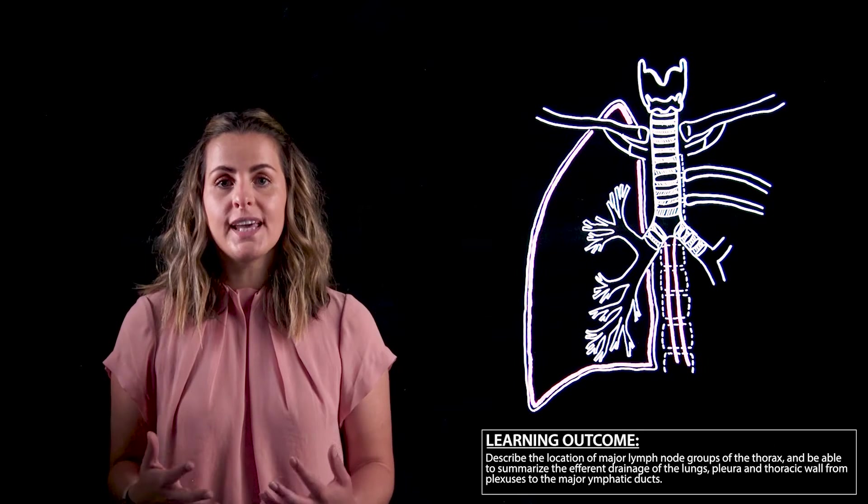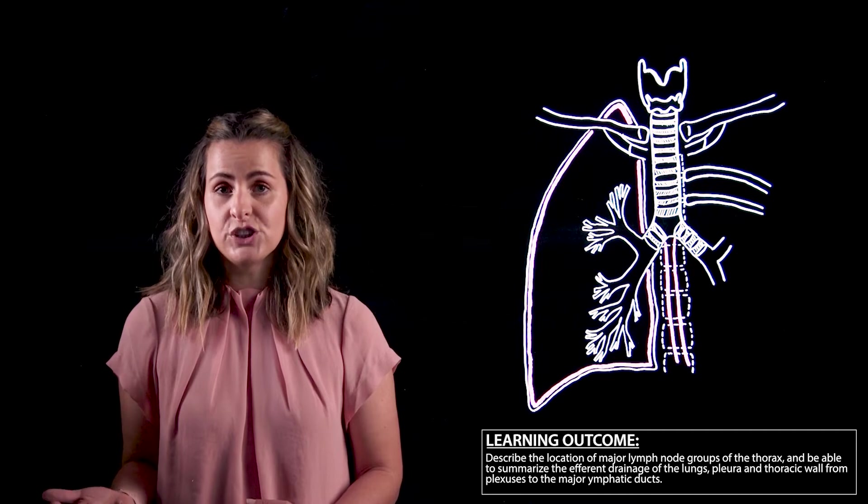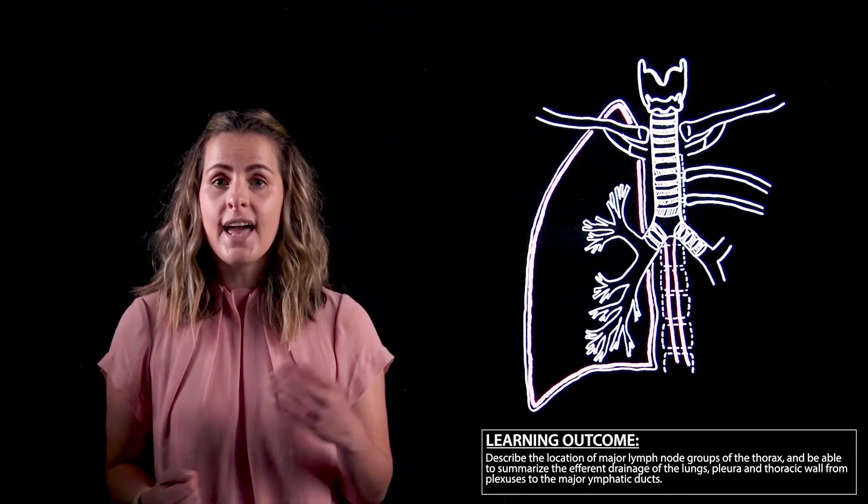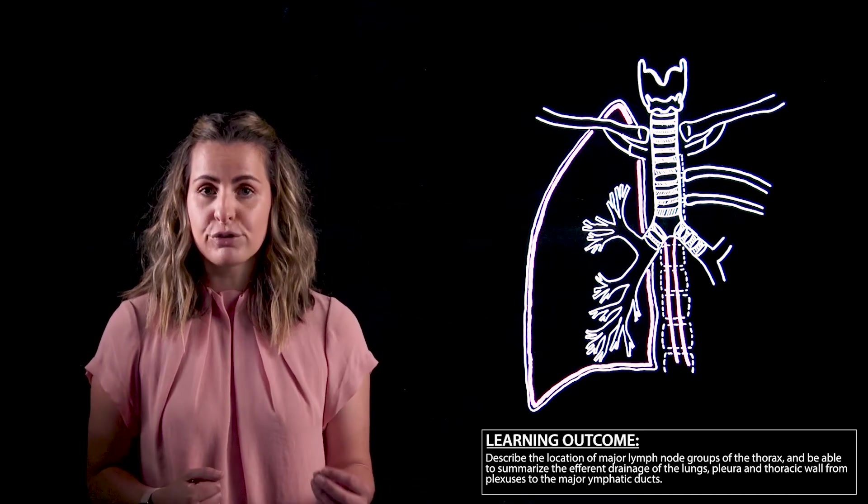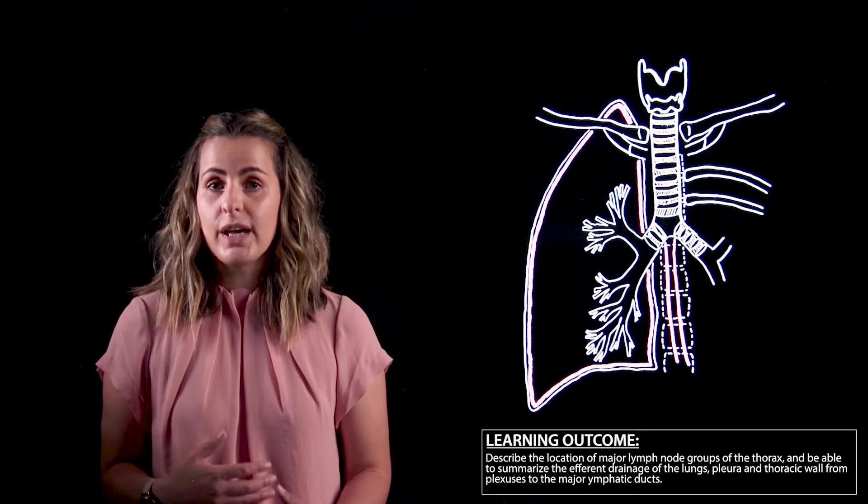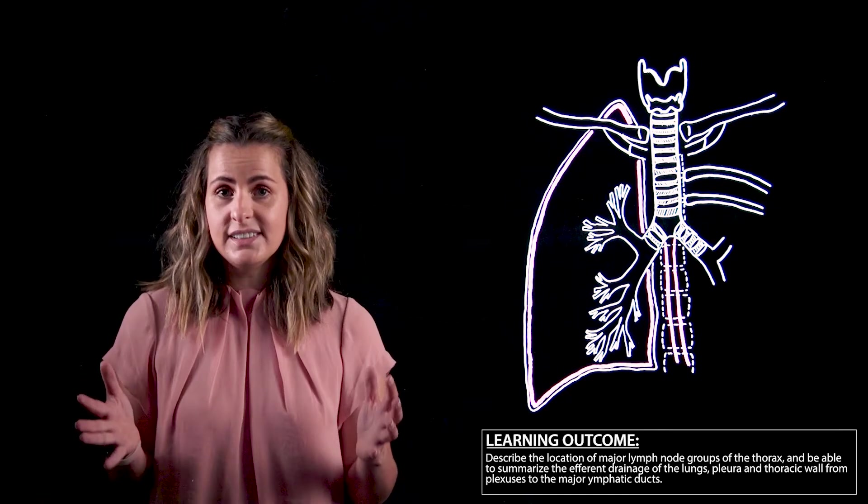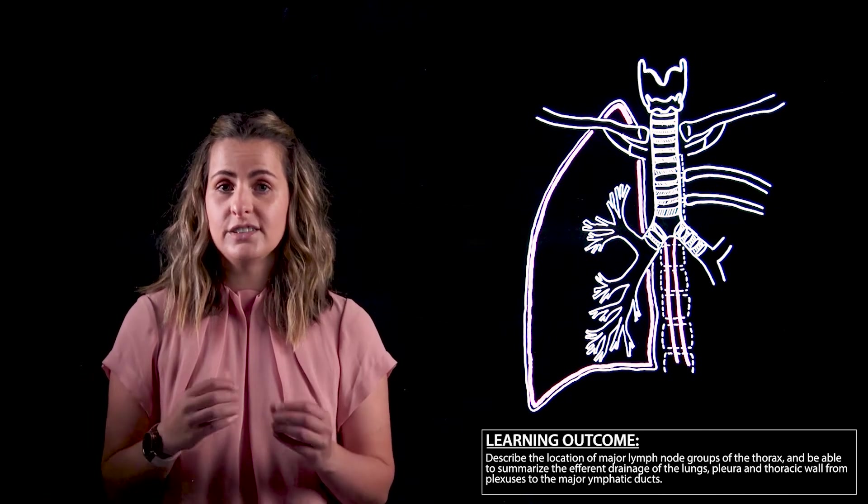The learning outcomes for this lightboard video are to describe the location of major lymph node groups of the thorax and summarize the efferent drainage of the lungs, pleura, and thoracic wall, all the way from the plexuses to the major lymphatic ducts. Just a heads up, this is a very advanced topic.